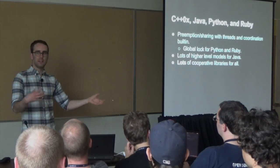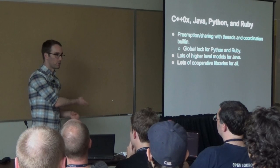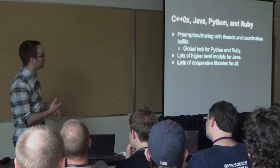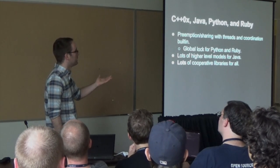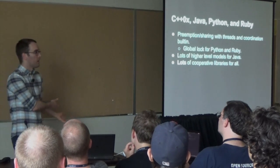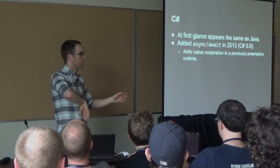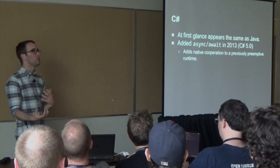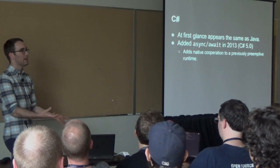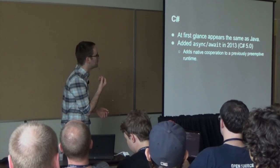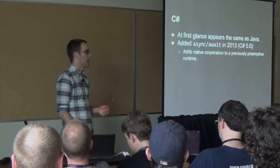C and C++ don't really have concurrency built into the language — they relied on OS system calls for low-level concurrency APIs up until C++11. C# at first glance is a lot like Java — you can spin up threads and share variables — but it has async/await keywords built in to add a more cooperative model, which was added in 2013, about 15 years after C# appeared. This is a cool example of bolting on more sophisticated concurrency features onto a language long after it was created.